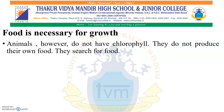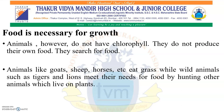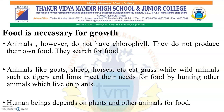Animals, however, do not have chlorophyll and do not produce their own food — they search for food. Animals like goats, sheep, and horses eat grass, while wild animals such as tigers and lions meet their needs for food by hunting other animals which live on plants. Human beings depend on plants and other animals for food.